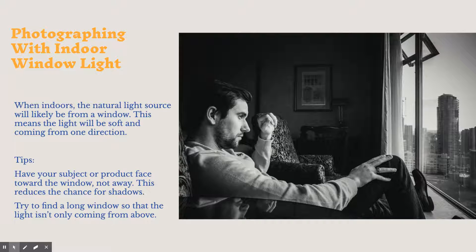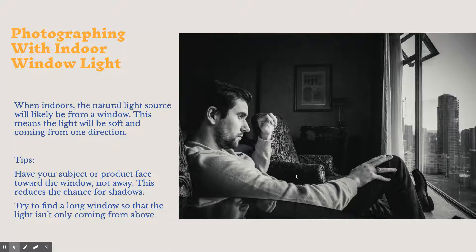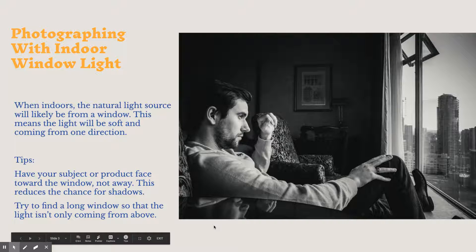For instance, if you're shooting through a window, you want to point your subject or product towards the window, facing the window. That way the light is coming from one direction, and you as a photographer should shoot to the side, off to the side of your subject. That way, this light that's coming in, pouring in, is softly touching every inch of your subject's body.